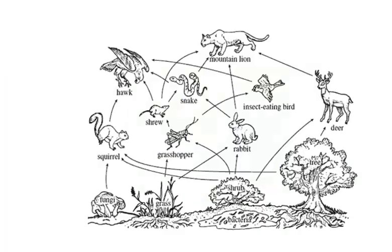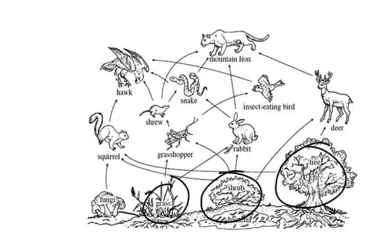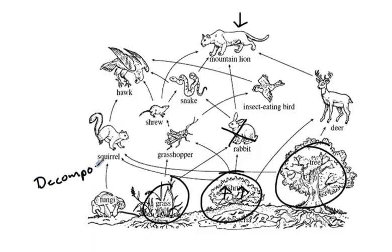Finally, we have an example of a food web. At the bottom we find our autotrophs. Notice the direction the arrows go — the arrows point into the mouth of the organism that is eating. So energy goes from the grass into the rabbit, from the rabbit into the snake. The apex predators here are the mountain lion and the hawk. If a disease got rid of the rabbits, the mountain lions would suffer because they'd lose a food source, while shrub populations would increase because less would be eating them. The web is interrelated. Fungi are also listed here as an example of decomposers, which break down any dead material found in the ecosystem.